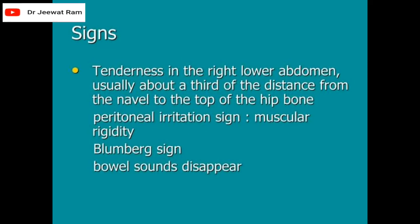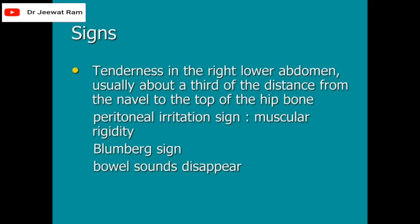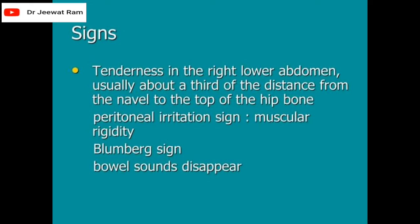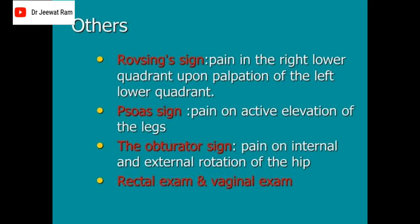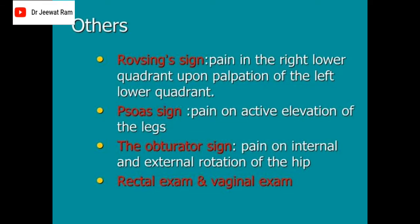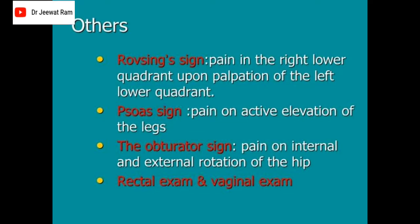Signs: tenderness in the right lower abdomen, usually about a third of the distance from the navel to the top of the hip bone. Peritoneal irritation signs, muscular rigidity, Blumberg sign, bowel sounds disappear. Rovsing's sign — pain in the right lower quadrant upon palpation of the left lower quadrant. Psoas sign — pain on active elevation of the legs. Obturator sign — pain on internal and external rotation of the hip. Rectal and vaginal examination.